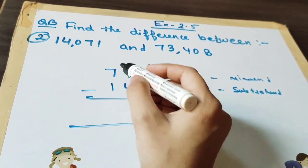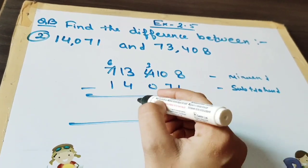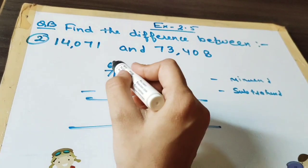Now again we have to take borrow. This will be now 6 and 13. 13 minus 4 is 9. And 6.